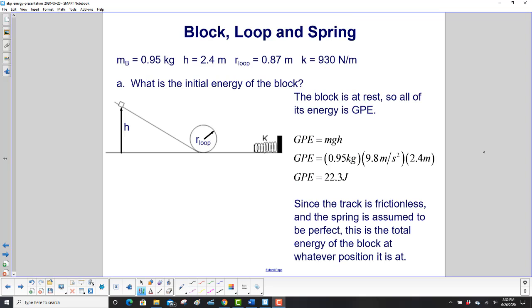What is the initial energy of the block? The block in the beginning, when it's at height h on the incline, is at rest, so all of its energy is GPE. We have our equation for GPE, it's just mgh. Put in the values and we get 22.3 joules.